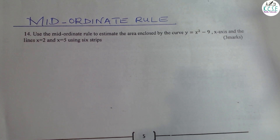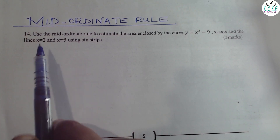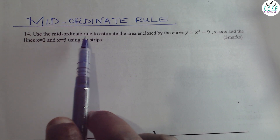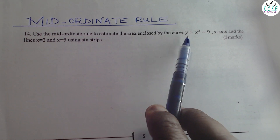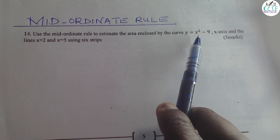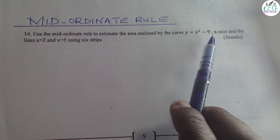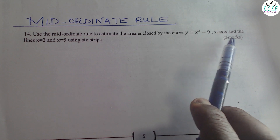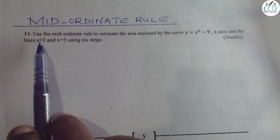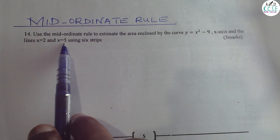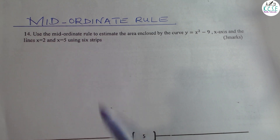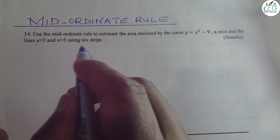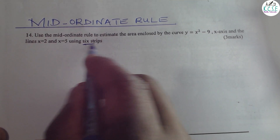Welcome. We're going to use the mid-ordinate rule to estimate the area enclosed by the curve y = x² − 9, the x-axis, and the lines x = 2 and x = 5, using 6 strips.